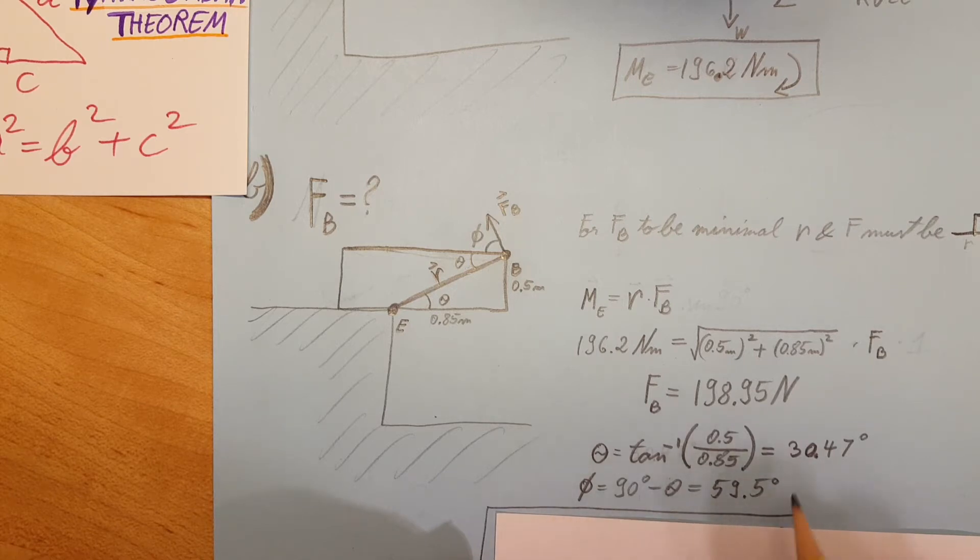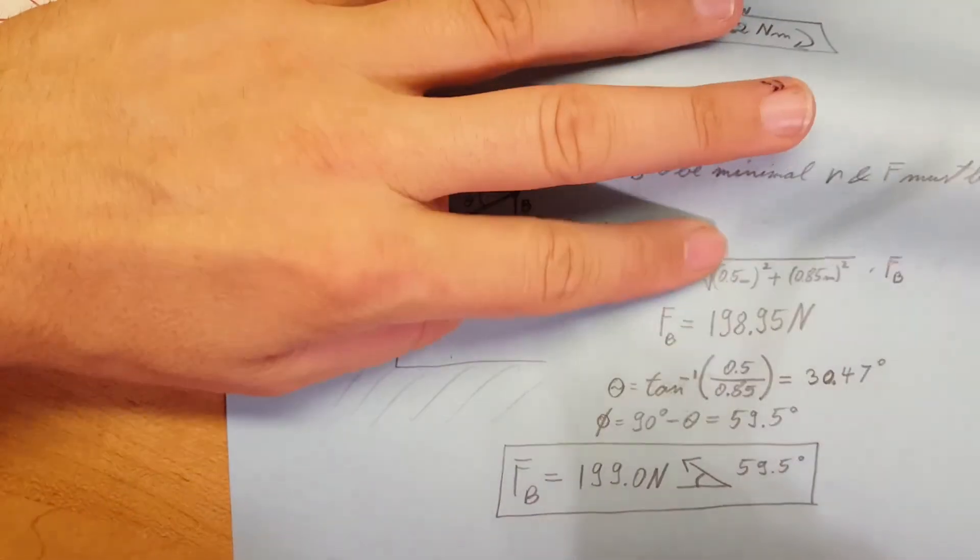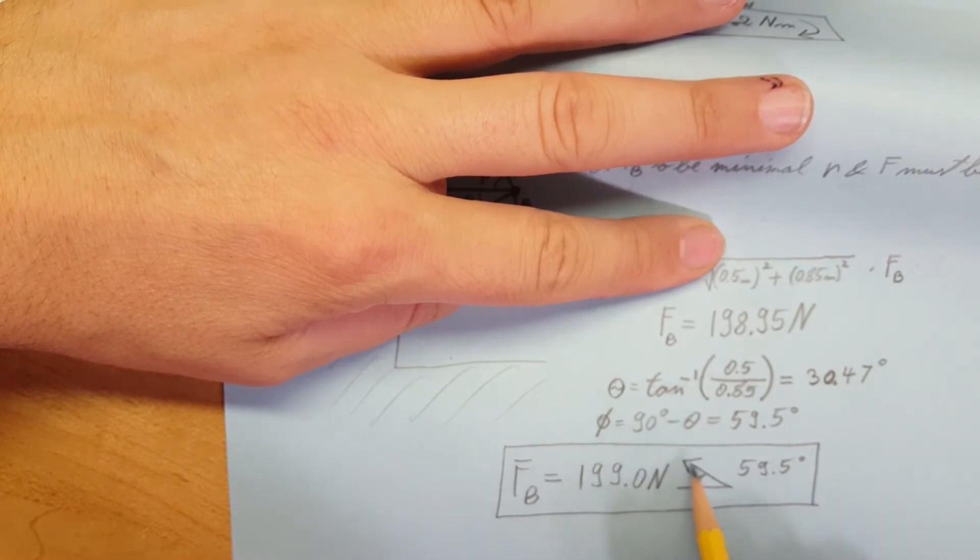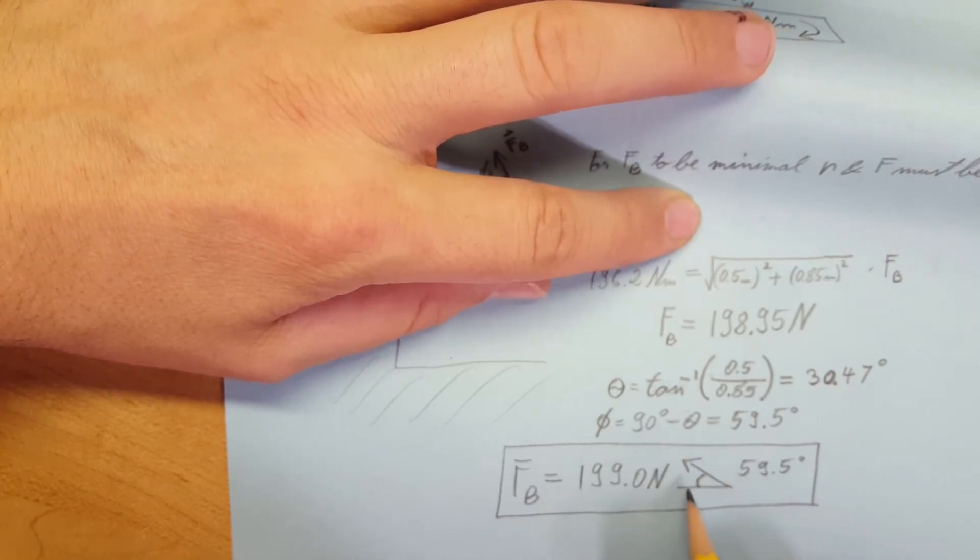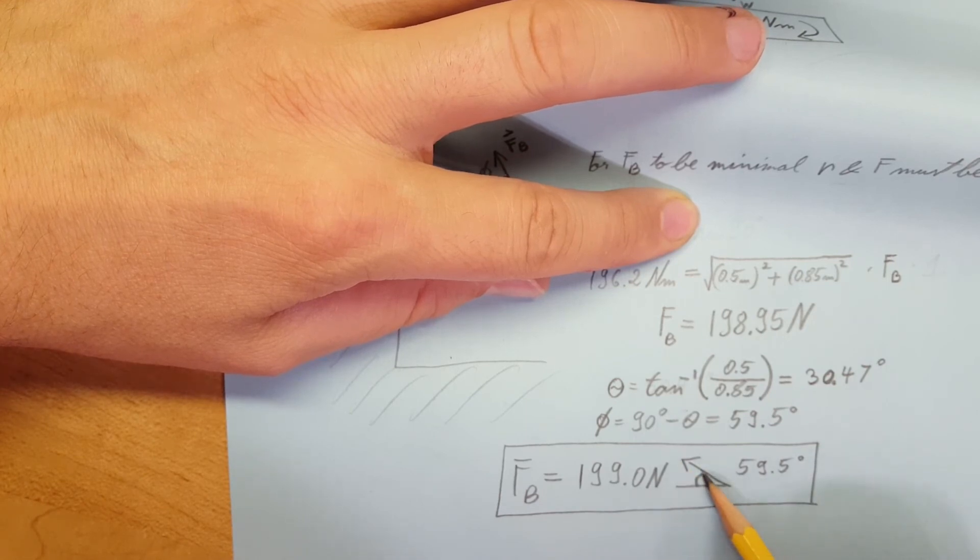And we can write our final value as F_B equals 199.0 newtons with a direction of our angle 59.5 degrees this way.